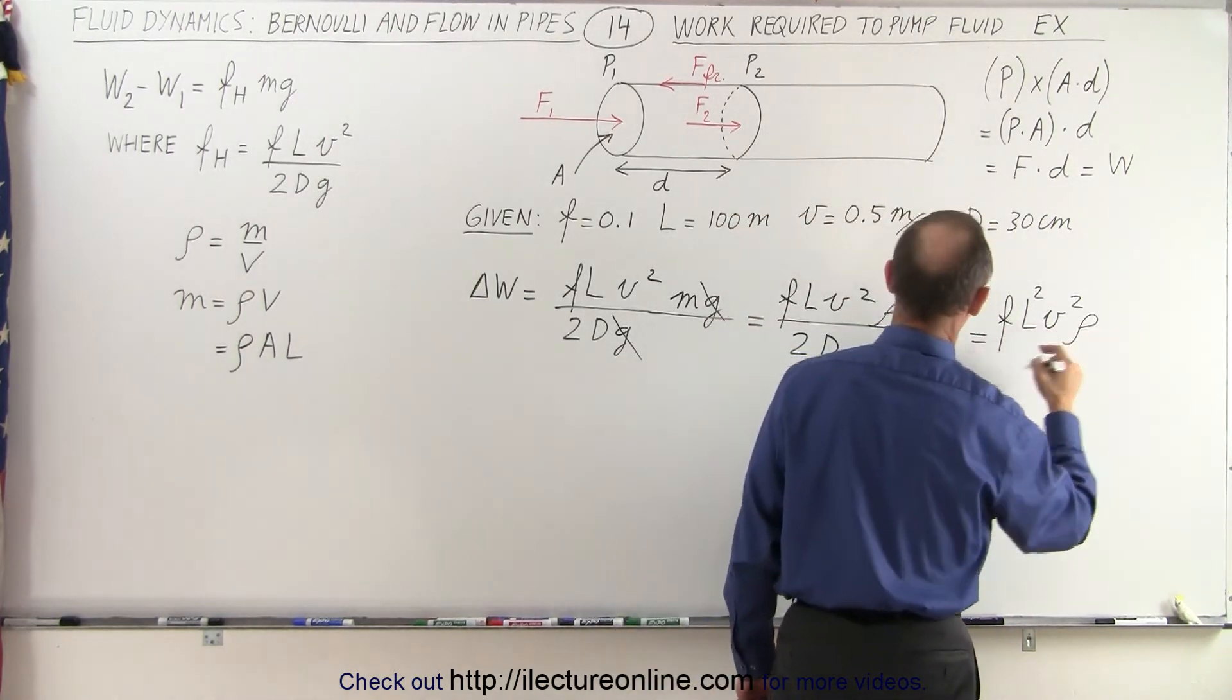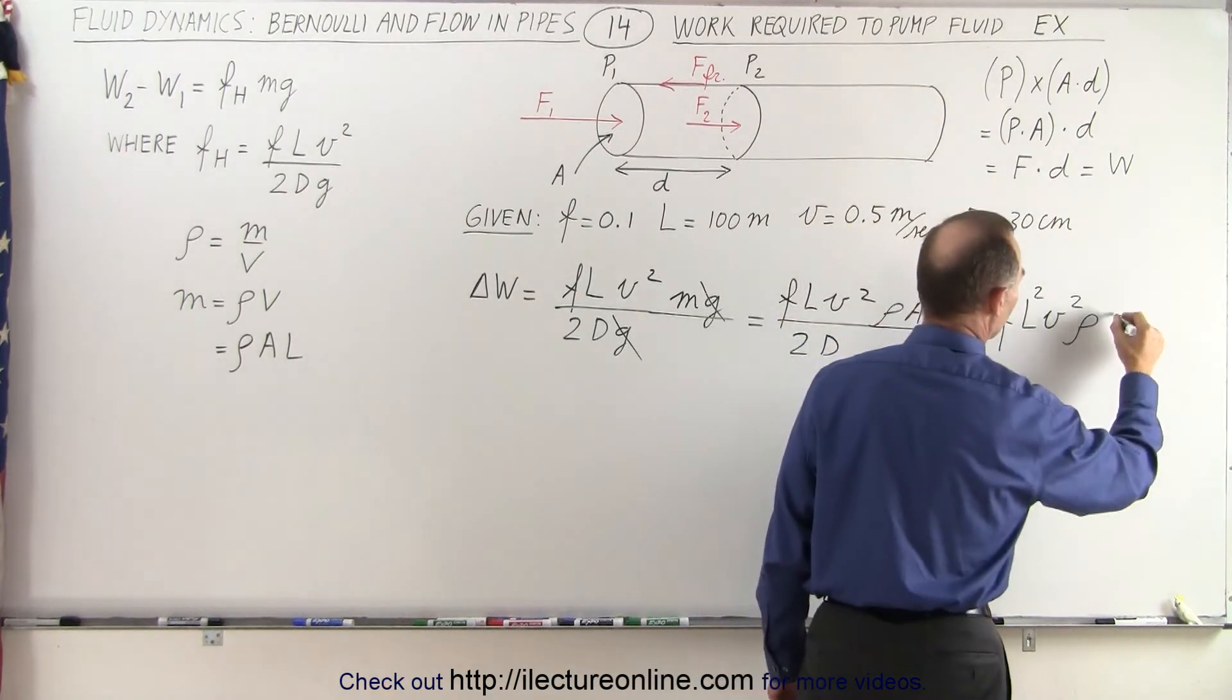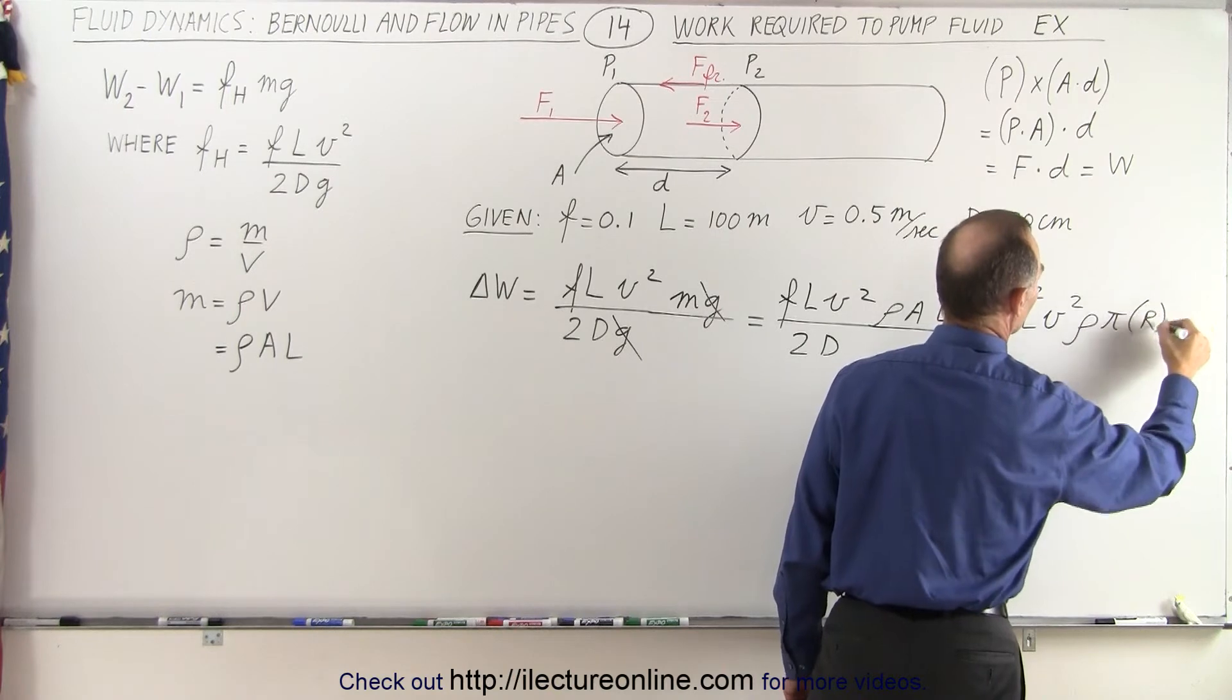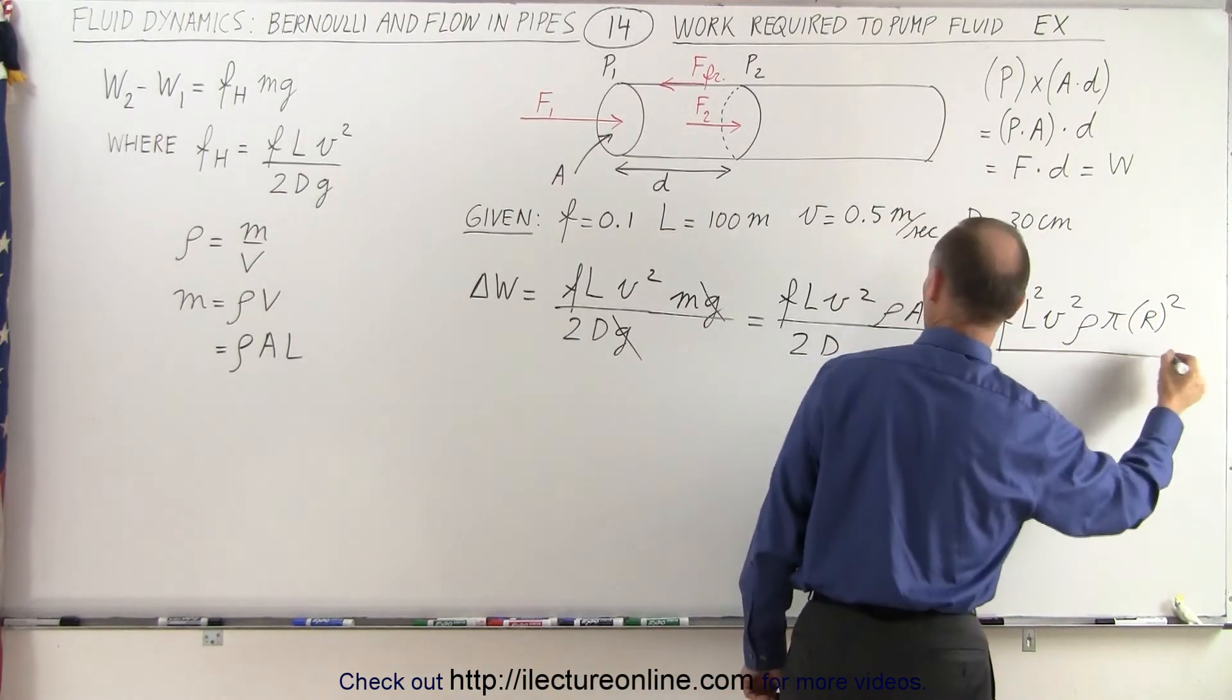And we have the density, and the cross-sectional area, that would be pi times the radius, that would be R squared, all divided by 2D.